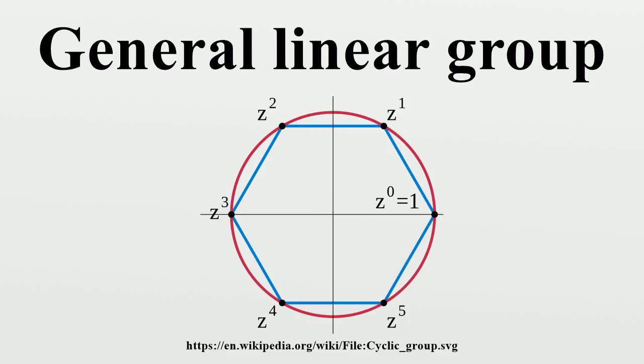Affine group: The affine group Aff(n,F) is an extension of GL(n,F) by the group of translations in F^n. It can be written as a semidirect product: Aff(n,F) = GL(n,F) ⋉ F^n, where GL(n,F) acts on F^n in the natural manner.